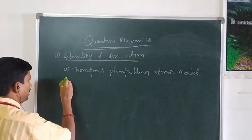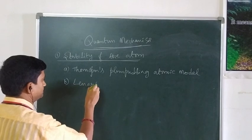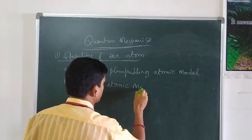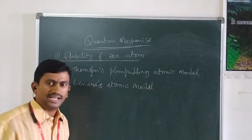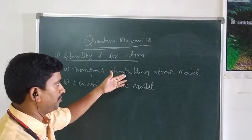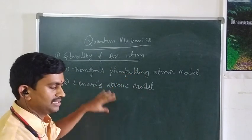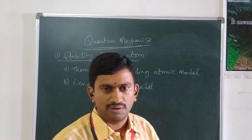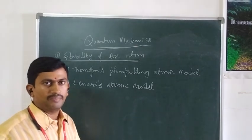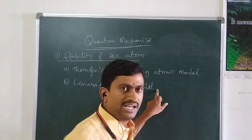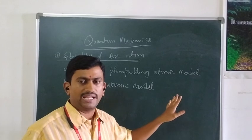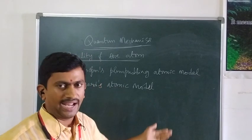The second model is Lenard's atomic model. Lenard adopted the positives of Thomson's model — that the atom consists of both positive and negative charges — but apart from these charges, Lenard proposed that the atom must also have a lot of empty space. That was a new postulate given by Lenard. However, this particular Lenard model also failed to explain any experimentally observed facts.